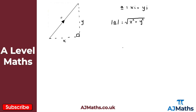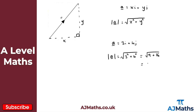Let's pick a basic example. If the vector a equals 3i plus 4j — I've picked this because it's a Pythagoras triple — then the magnitude of a is the square root of 3 squared plus 4 squared, which is the square root of 9 plus 16, giving us the square root of 25, which equals 5. So the magnitude of vector a is 5 when a equals 3i plus 4j.